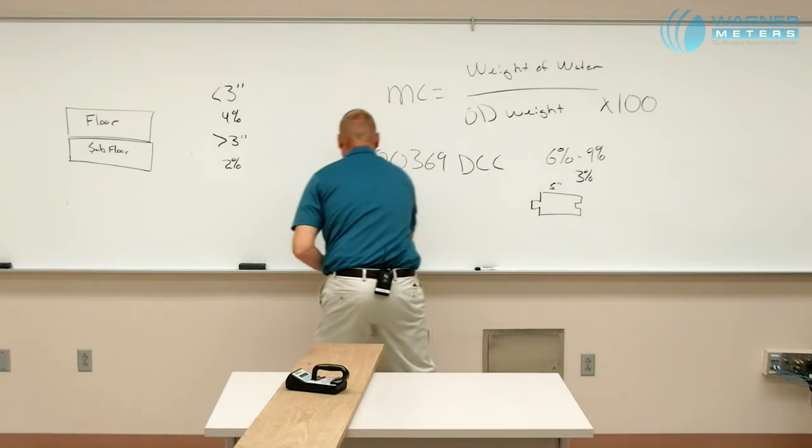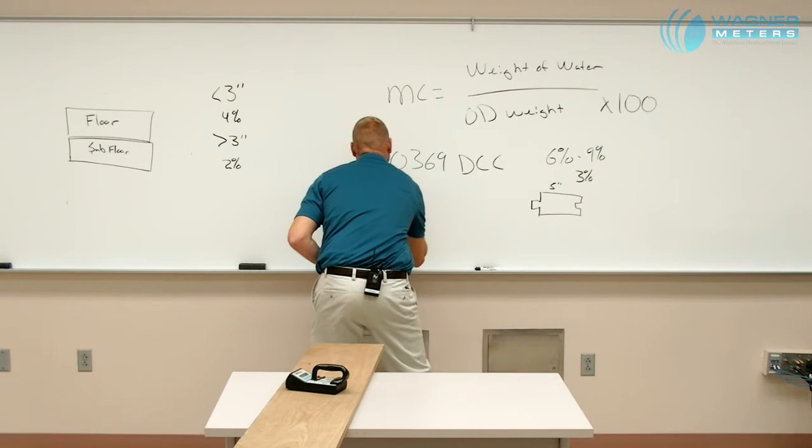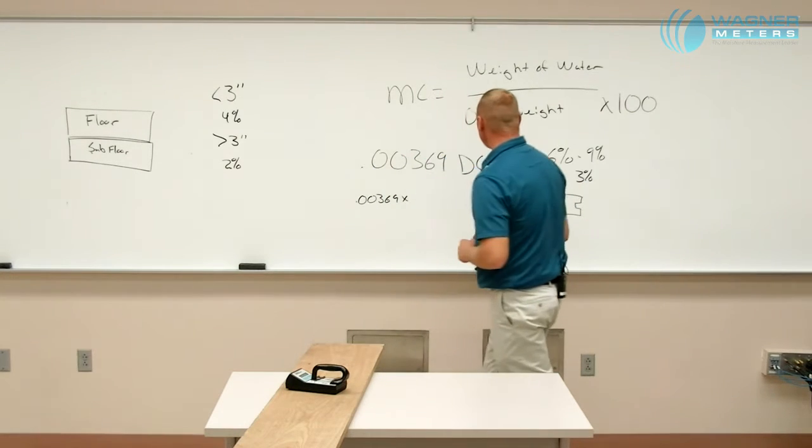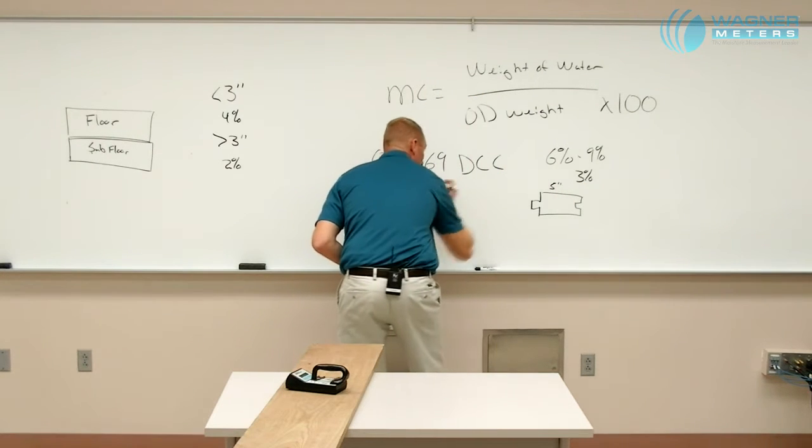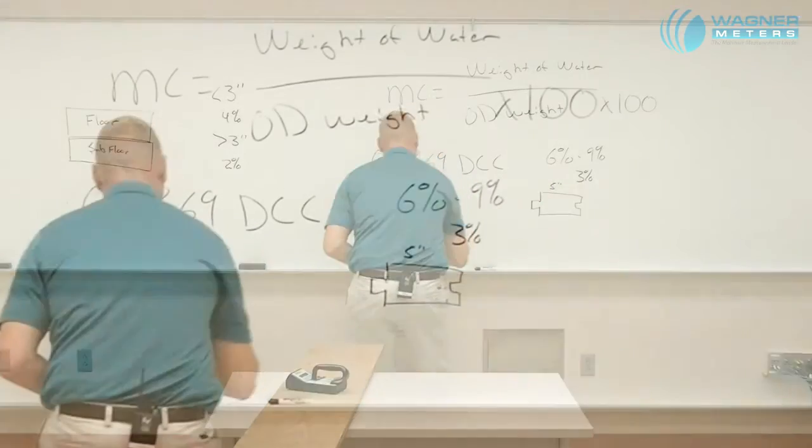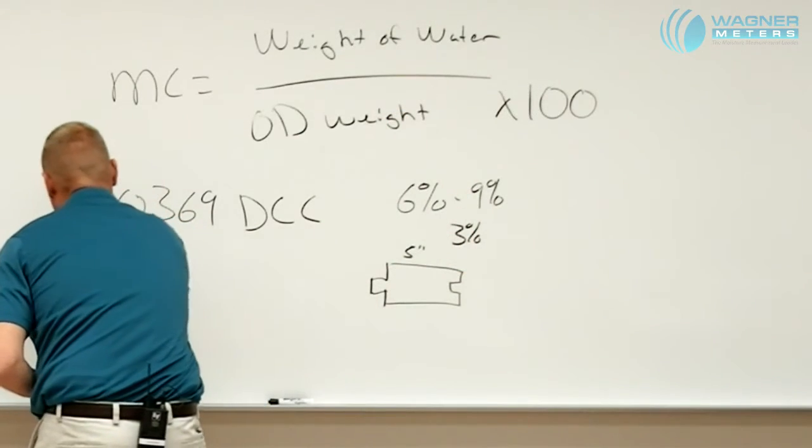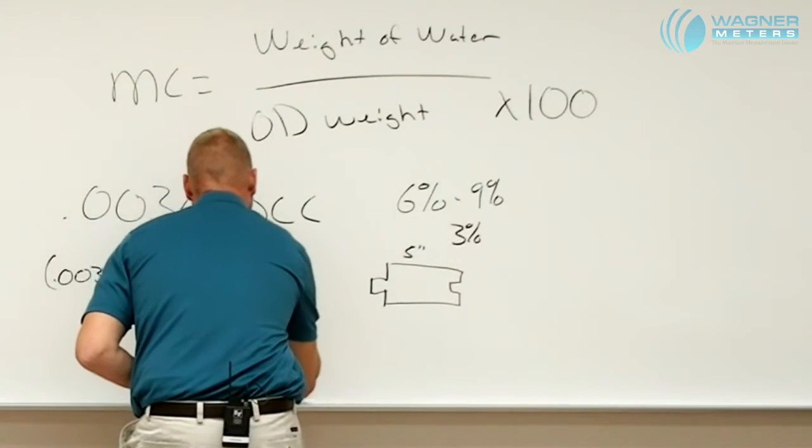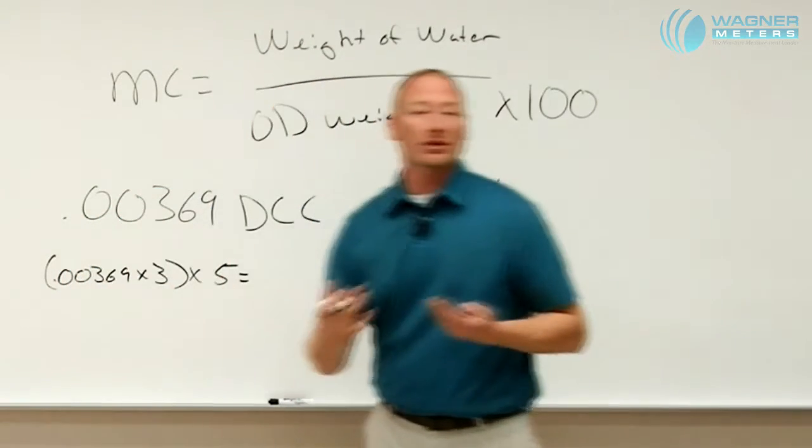So how do we do that? We take this dimensional change coefficient, 0.00369, and we take that times the change in percentage of moisture content, we multiply that times the width of our material, and that gives us how much that material is actually going to move.